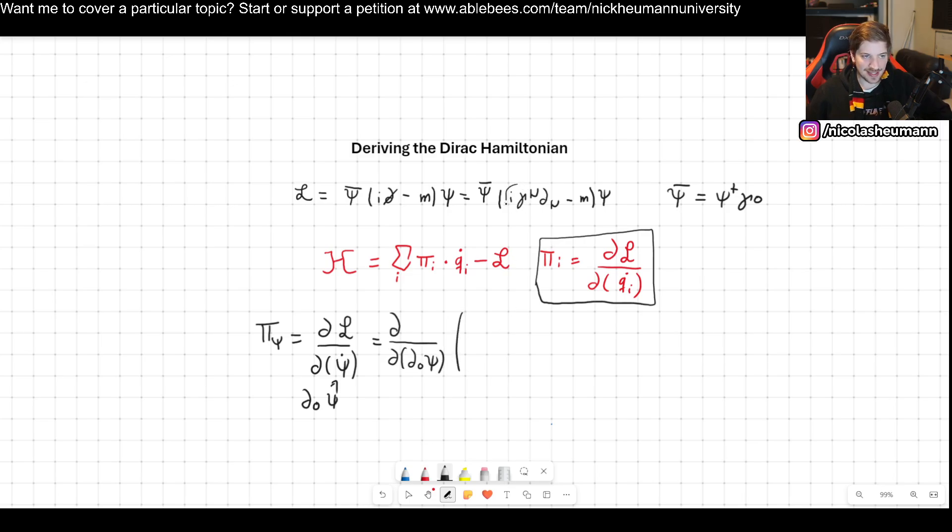So we take the derivative with respect to d0 psi of, and now let's expand this. So this would be psi bar i gamma 0 del 0 plus i gamma dot the spatial derivatives, and then of course we got this minus m psi.